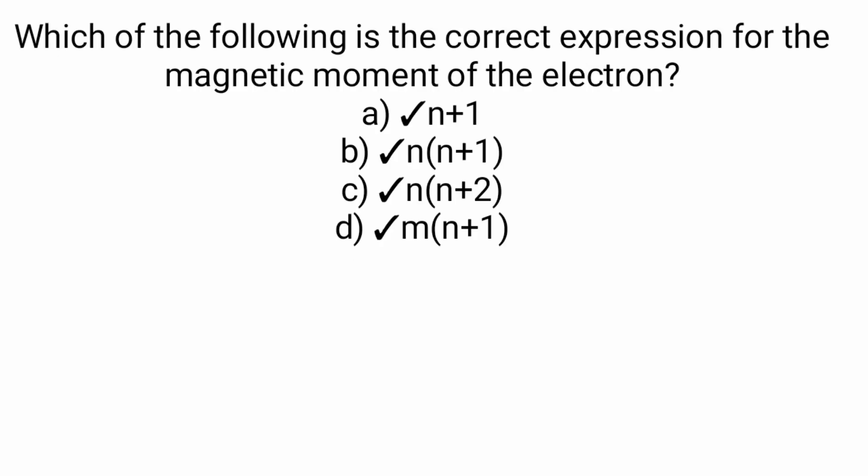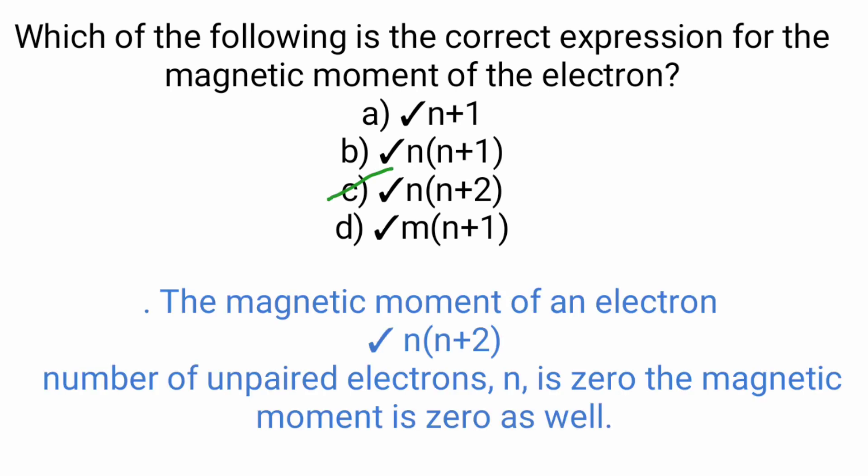Third is, which of the following is the correct expression for the magnetic moment of electron? So right option is option c. Magnetic moment of electron is square root n times n plus 2. Here we have the number of unpaired electrons. If there is no unpaired electron in the atom, then the magnetic moment will be 0.